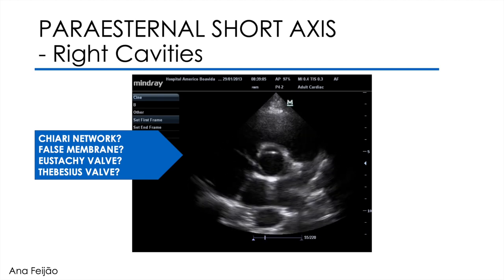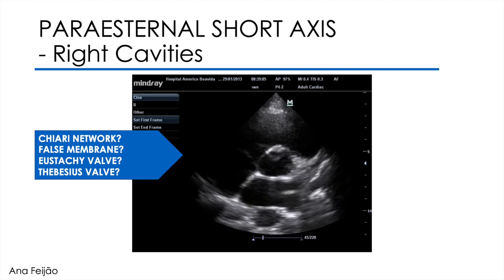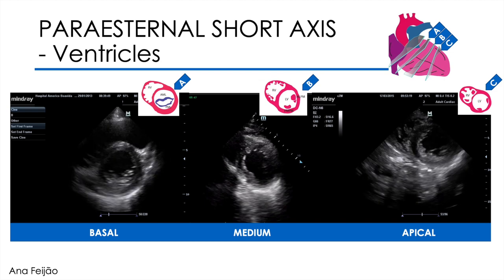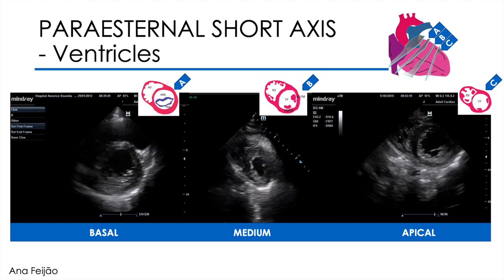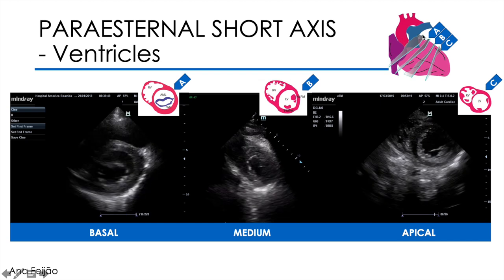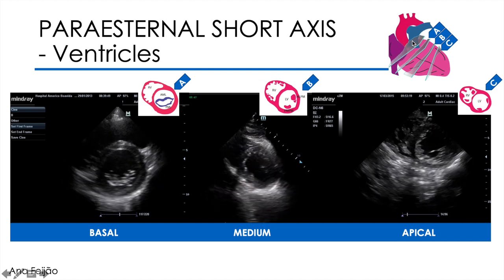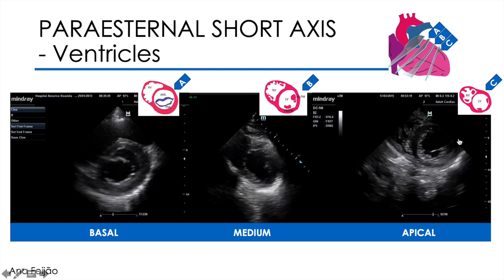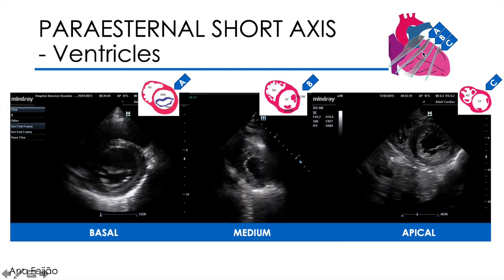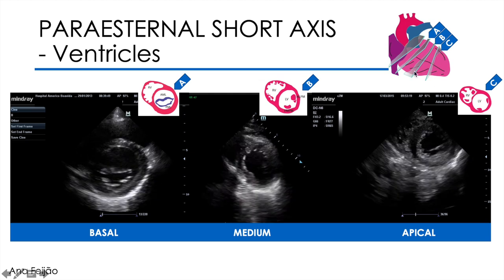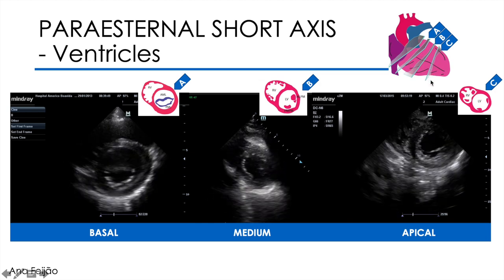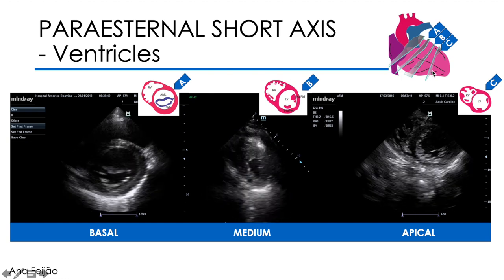We move on to the other parasternal short axis cuts. The parasternal short axis view is based on views resulting from cross sections of the heart, as if we cut the heart into slices. The slice at the level of the great vessels is the one that takes the most work in terms of evaluation. Scanning through the other levels, the evaluation is more subjective and faster. This sweep is done with small tilts of the probe, scanning from the upper basal level in A to the apical tip — lower level — here in C.